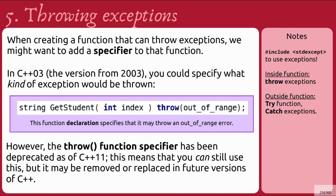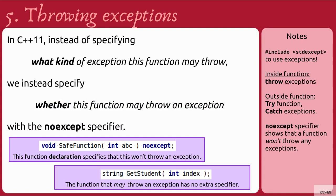When creating a function that can throw exceptions, we might want to add a specifier. In C++03, you would specify what kind of exception would be thrown, such as 'throw out_of_range' after the main header of the function declaration. However, this throw function specifier has been deprecated as of C++11 — you can still use it, but it may be removed in future versions. In C++11, instead of specifying what kind of exception may be thrown, we specify whether the function may throw at all, using the noExcept specifier. If the function may throw an exception, we simply leave that off.